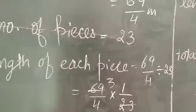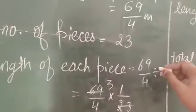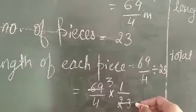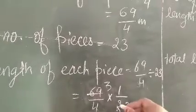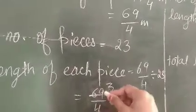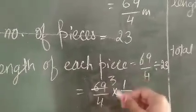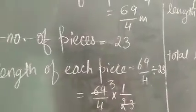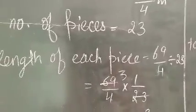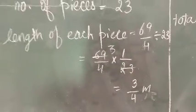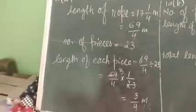I have taught you division in the last exercise. Whenever we divide, we multiply by the reciprocal, so we multiply by 1/23. Cancelling 23 into 69 gives 3, so the result is 3/4. Therefore, the length of each piece is 3/4 meter.